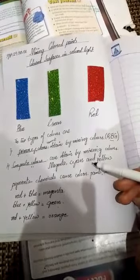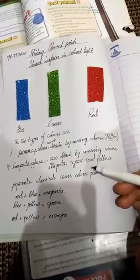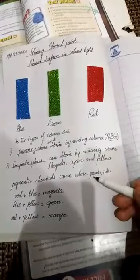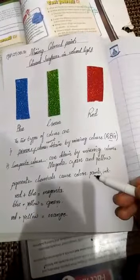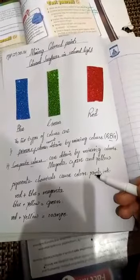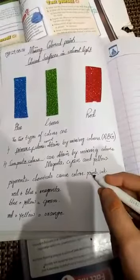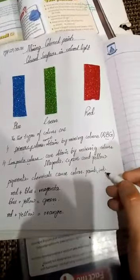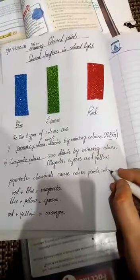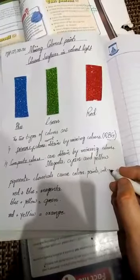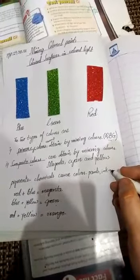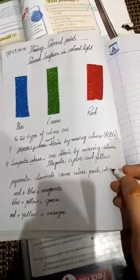Okay dear students, one more thing that is introduced in this chapter is pigments. So what are the pigments? Pigments are chemicals that cause colors. What are their examples? Their examples are paints and the crayons that we are using, colored crayons that we are using in our daily life.